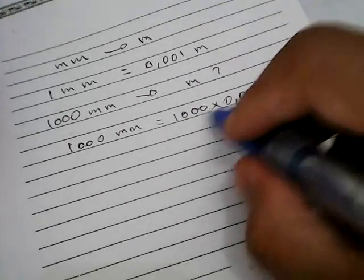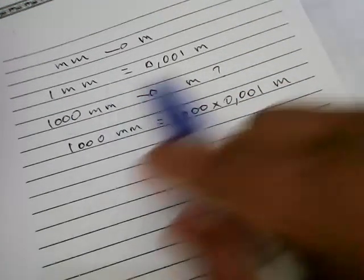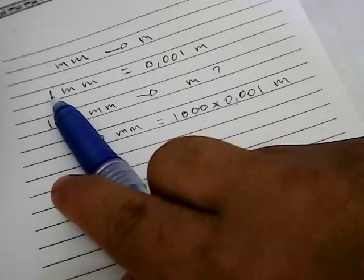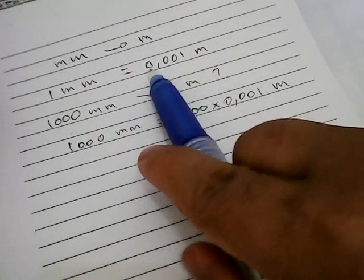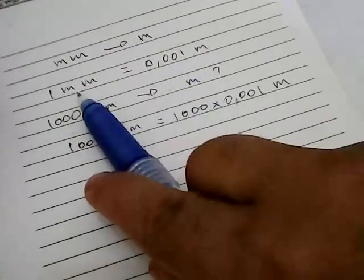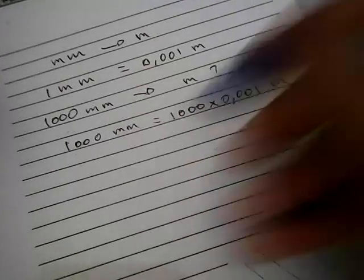Why do we multiply this number? Because we want to convert from millimeters to meters. Anything in millimeters we need to multiply with this number to convert millimeters into meters.